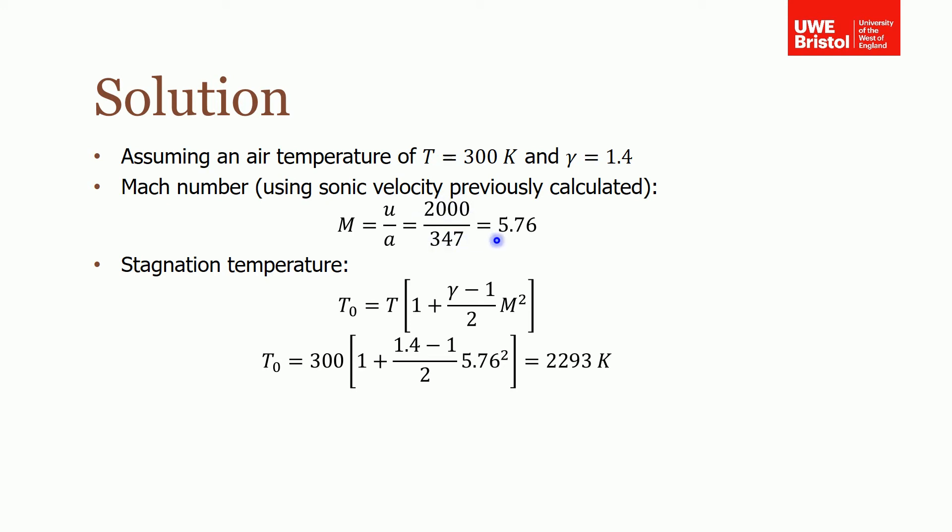So dividing one by the other I get a Mach number of 5.76, and then simply plug that into this equation here to work out the stagnation temperature. Put in the temperature that I've chosen, 300 Kelvin and gamma, and if I work all that out then I get a stagnation temperature of over 2,000 Kelvin, so 2,293 Kelvin.